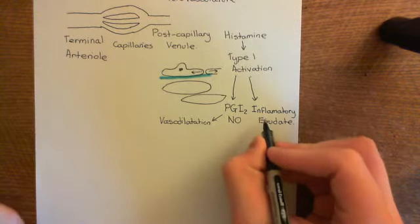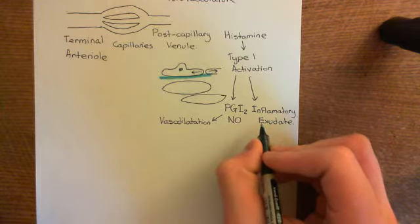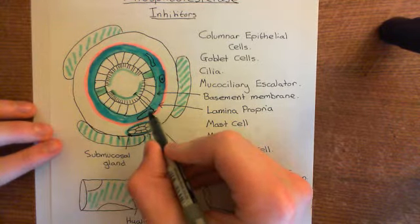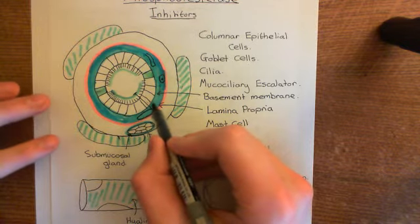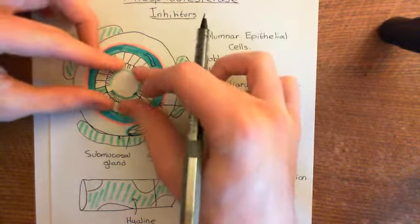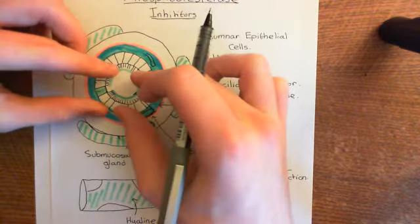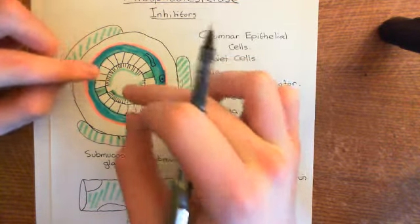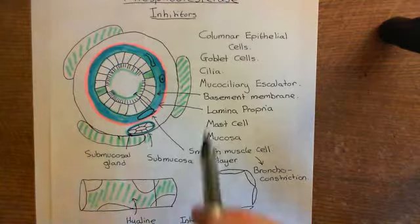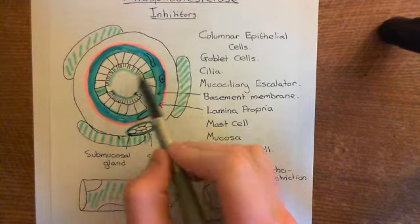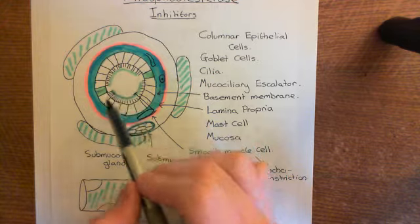The inflammatory exudate causes swelling of the lamina propria. The huge influx of new fluid from the bloodstream swells the lamina propria, pressing on the basement membrane and pushing it inwards, along with the epithelial cells. This again leads to constriction of the lumen of the airway — together with smooth muscle contraction, both contribute to narrowing of the lumen.